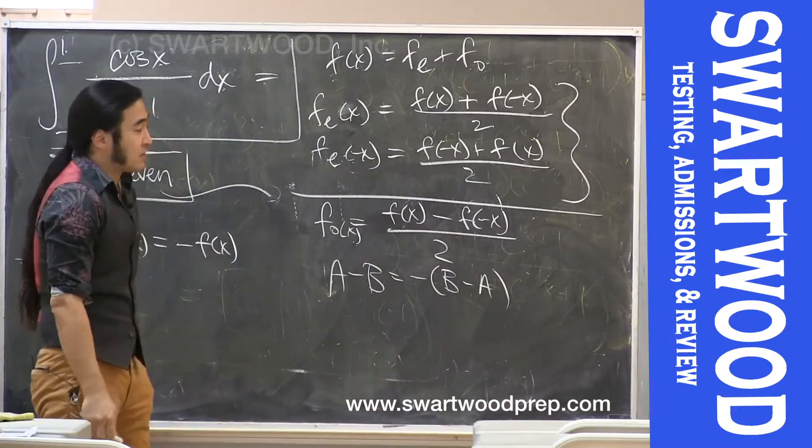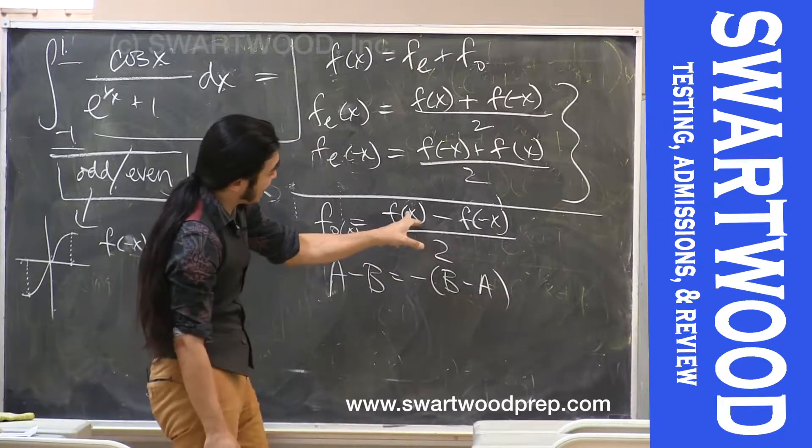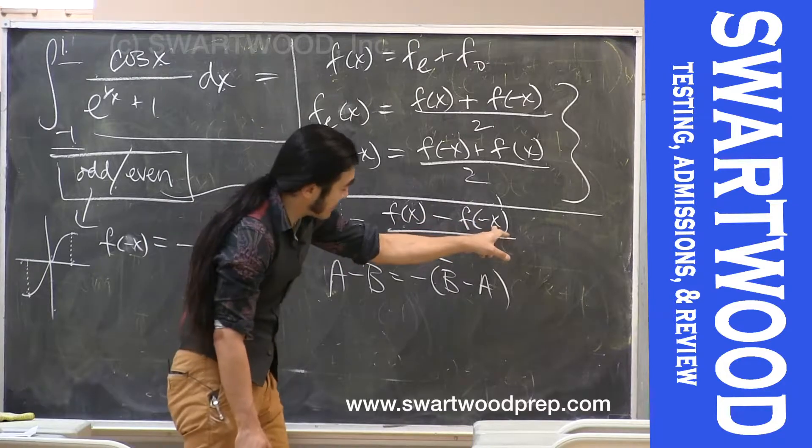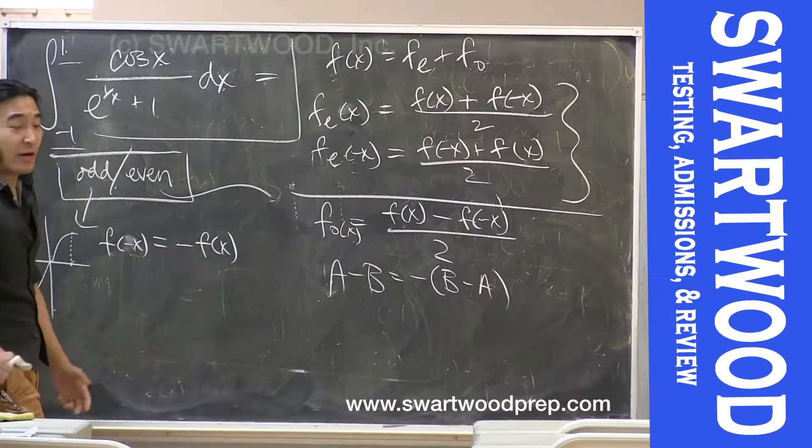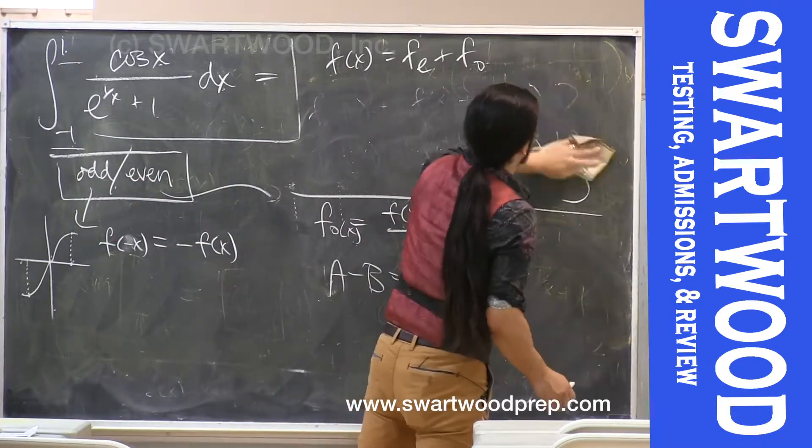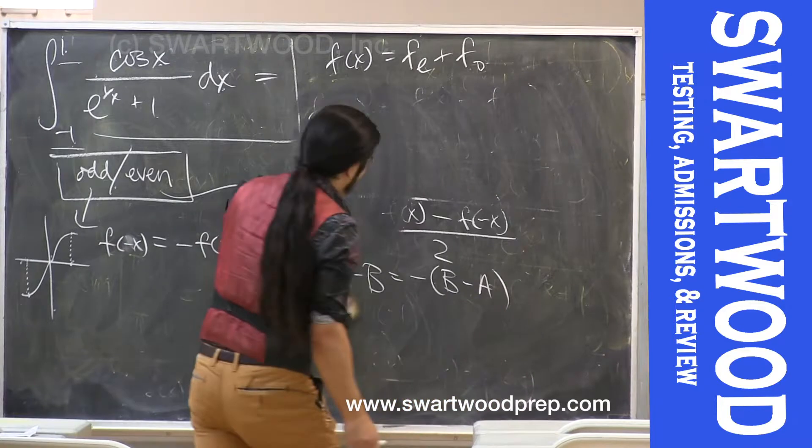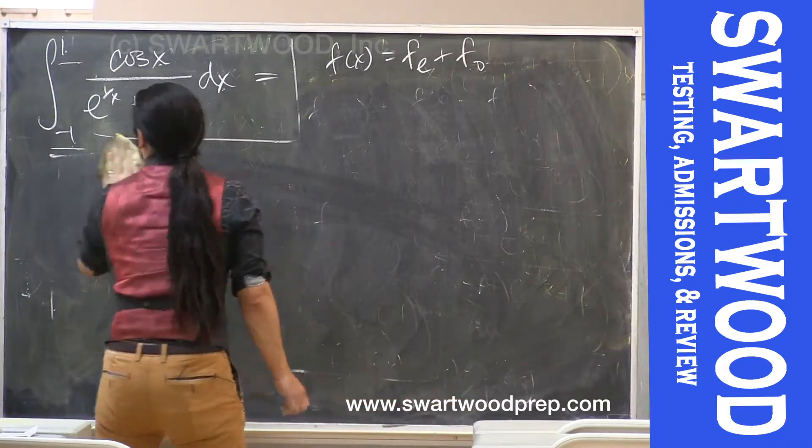So what ends up happening here is when we substitute, we have a minus b. When we plug in negative x, we're going to have f of negative x minus f of x, which is b minus a. So one will be the negative of the other, okay? All right, so all I need to believe here is that you can take any function and write them as an even and odd guy put together. Okay, so how does that help us?